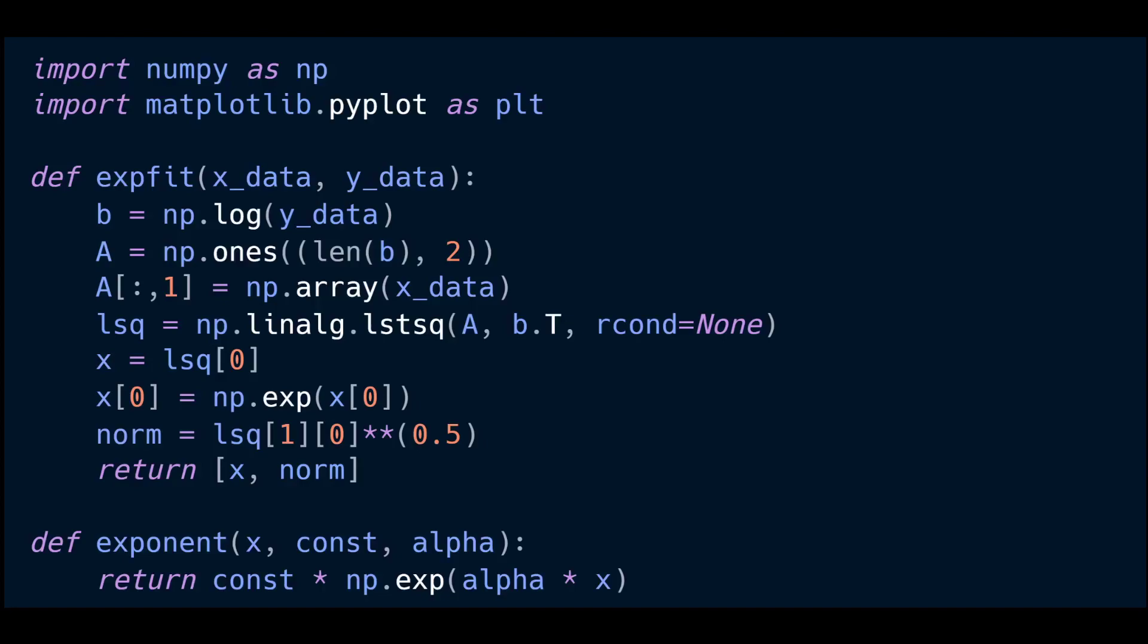It accepts x data and y data. We're taking that y data and taking the natural log of all of it right away, setting that equal to our b variable. We're generating our A matrix using the numpy ones function so we don't have to change any of the values of the first column of our matrix. Then we're sliding all of our x data into that second column of our A matrix.